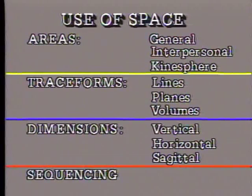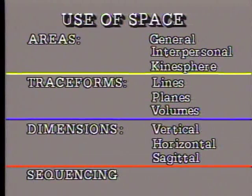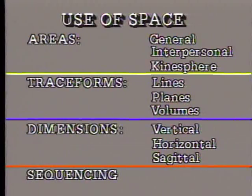To summarize, basic parameters of the use of space include the following: areas of space, which are general or environmental space, interpersonal space, and personal space or the kinesphere; trace forms, which include lines, planes, and volumes; and dimensions — the vertical, the horizontal, and the sagittal.